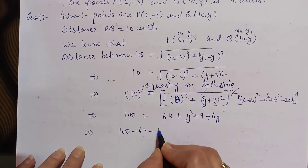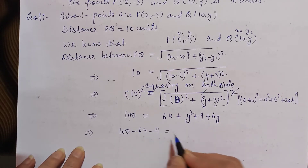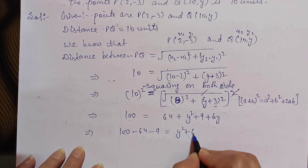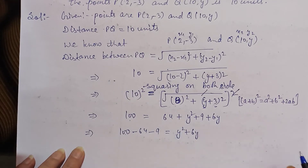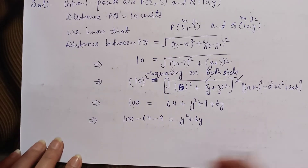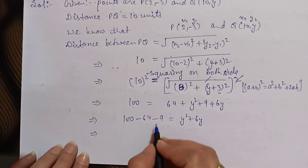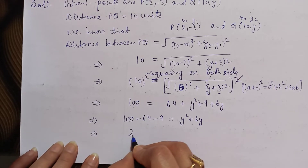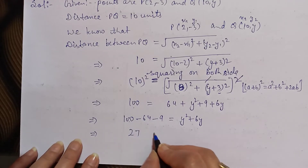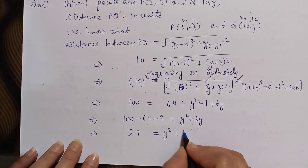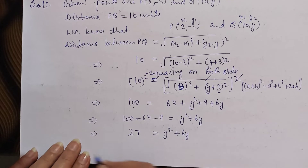So we will use the identity here. We get minus 9. Now y² + 6y — we will bring to the right side and solve this to get 27. So we have y² + 6y.